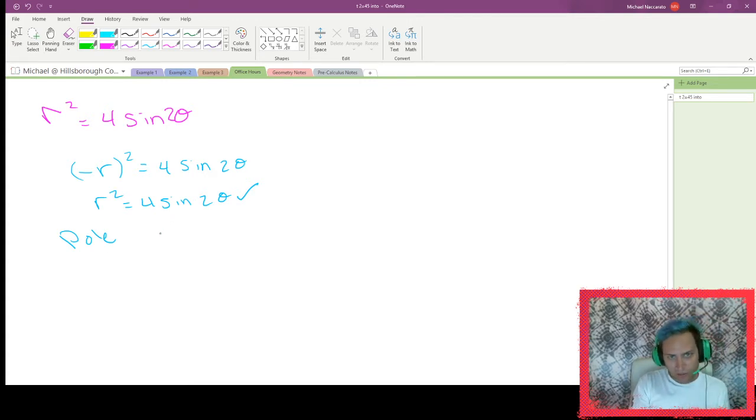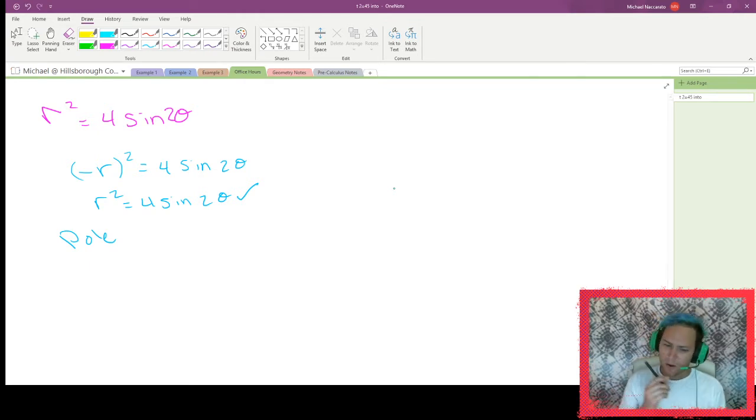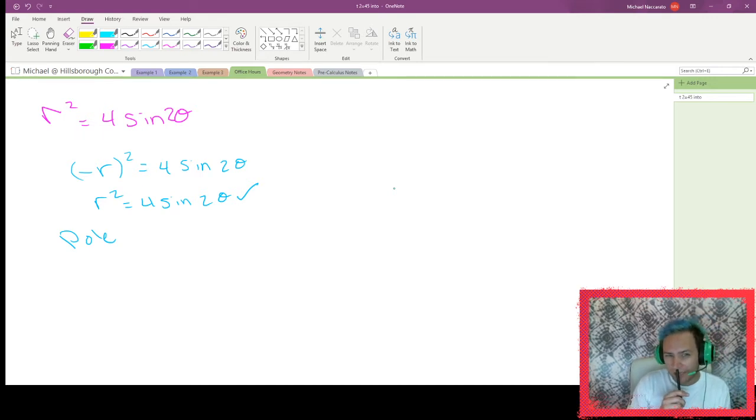Because if we're testing if it has symmetry to the pole, remember what we do is we replace the r with negative r, but we leave theta as is. If I replace r with negative r and we have negative r squared equals this exact thing that doesn't change over here, well, the negative r squared becomes r squared again. So you get the exact same thing. So check, yes. So with respects to the pole itself, this graph is symmetrical. So what that tells me is, just like with the other one, we need to graph 0 to pi.